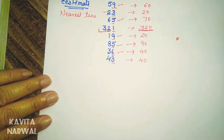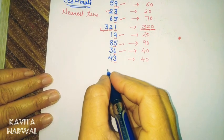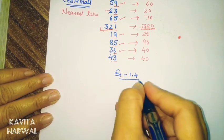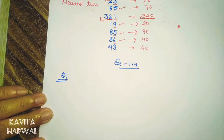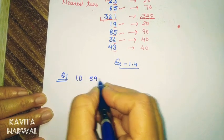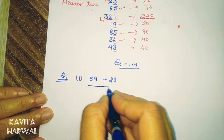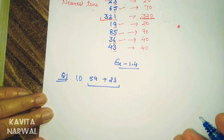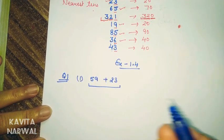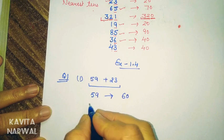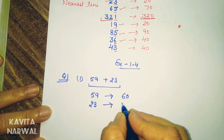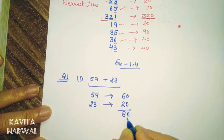Now we discuss Exercise 1.4. Question 1: we have to take the estimation first and then find the sum. The first question is 59 plus 23. We can solve in two ways. Method one: 59 rounds to 60, 23 rounds to 20, and the estimated sum is 80. Method two: first add 59 and 23 to get 82, then the round off of 82 is 80. In both cases we get the same answer: 80.